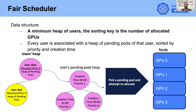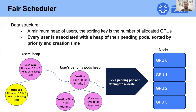The data structure we use is a two-dimensional heap. In the main heap, every node represents a user and we sort the heap by the number of allocated GPUs that user uses. Every node of a user is associated to another heap of their pending pods. The pending pods are sorted just as in Kubernetes — by priority and by creation time.